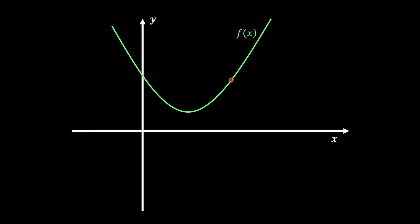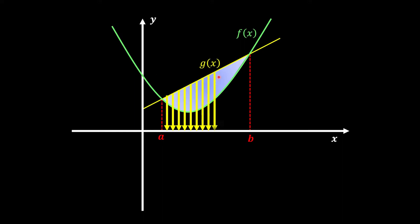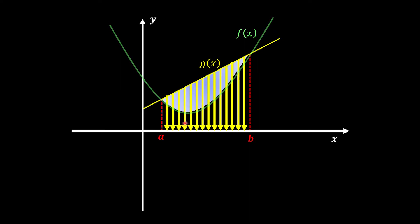Let's say we have a curve of f and a straight line of g. In order to find the area in between the curve and the line, first we need to know the intersecting points by using simultaneous. Let's say a and b are our intersecting points. Now we're going to look at the area under the line. If we draw a line bounded to the x-axis, the problem is the curve is blocking us from going to the axis. So what we're going to do is minus off the area under the curve.